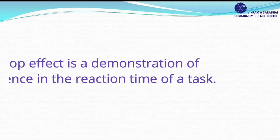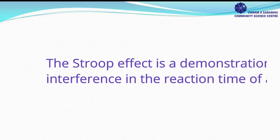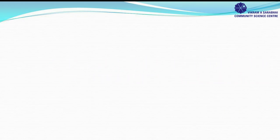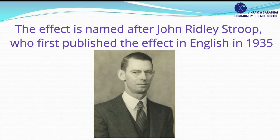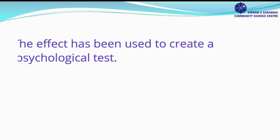What is the Stroop effect? The Stroop effect is a demonstration of interference in the reaction time of a task. The effect is named after John Ridley Stroop, who first published the effect in English in 1935. The effect has been used to create a psychological test.